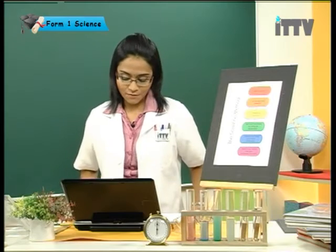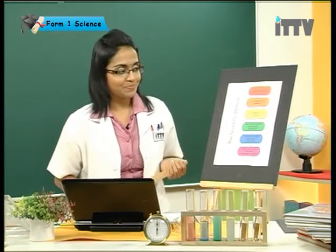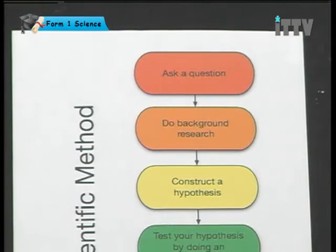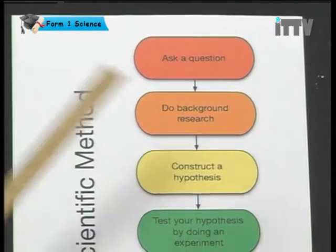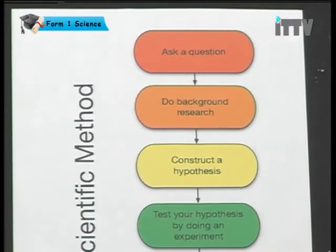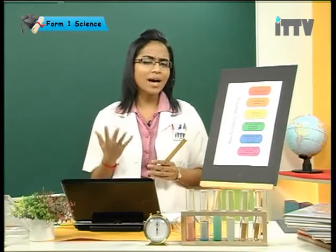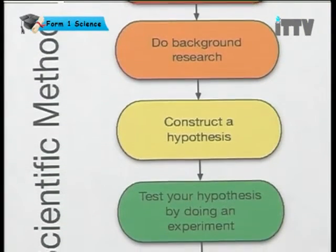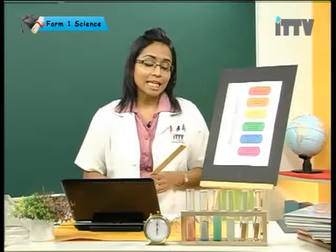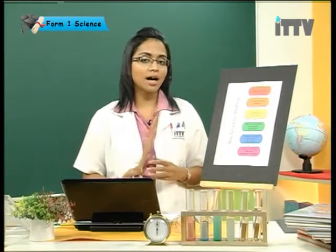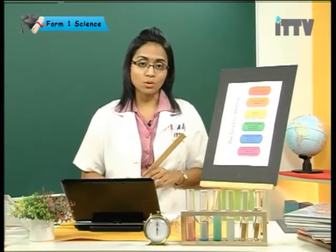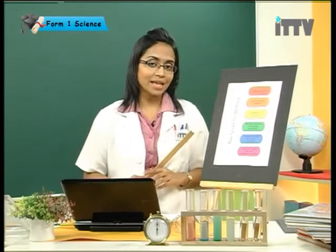Let's see the scientific method further in this diagram. Firstly, you have to ask a question. Next, do background research. Obviously, when you have something of a curiosity, you have to do background research — why are you curious regarding something? Next is construct a hypothesis. Let's say cockroaches need oxygen to breathe. This is a hypothesis. At the end of the experiment, you have to prove that yes, cockroaches need oxygen to breathe — then that's a valid hypothesis.